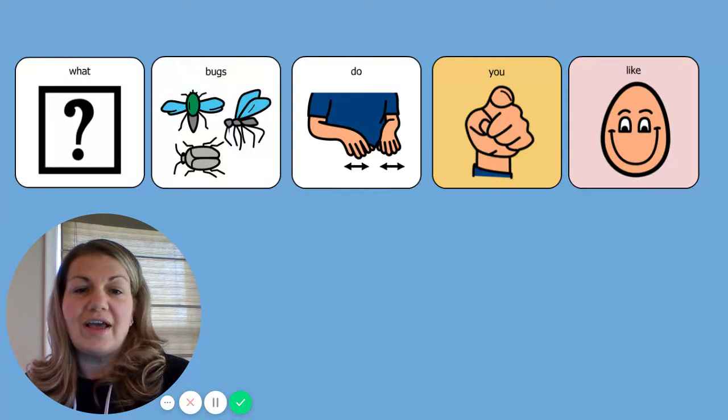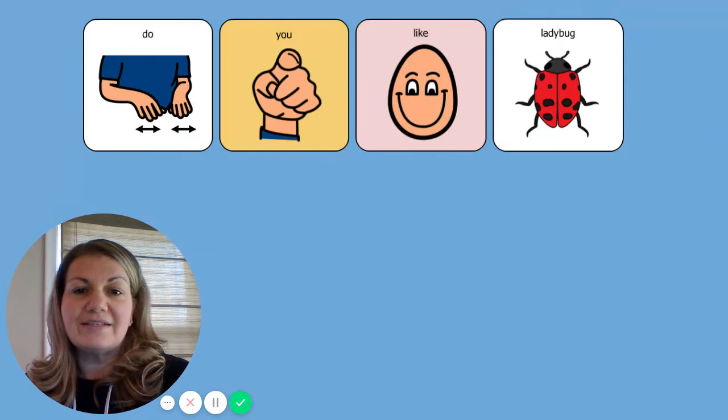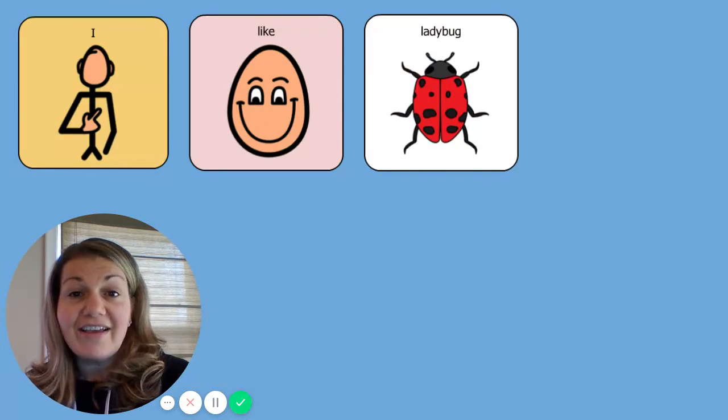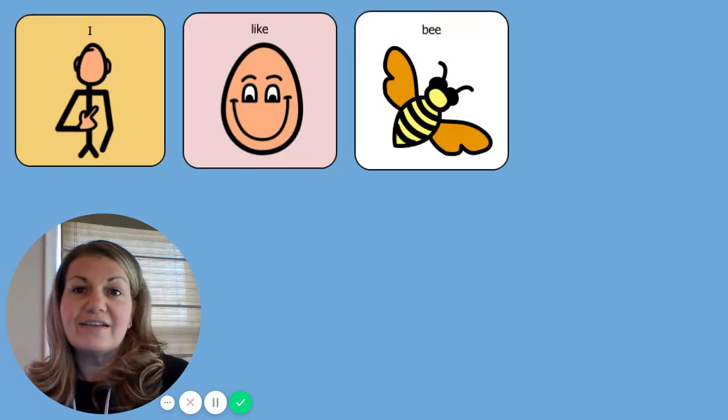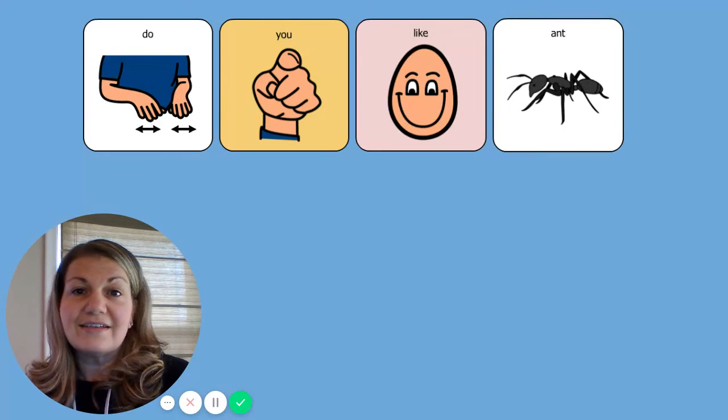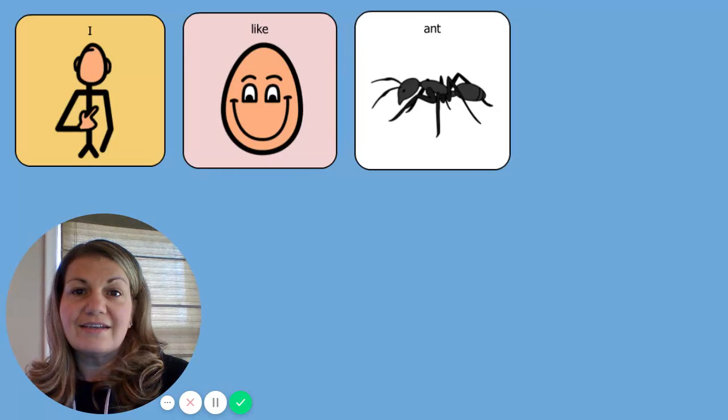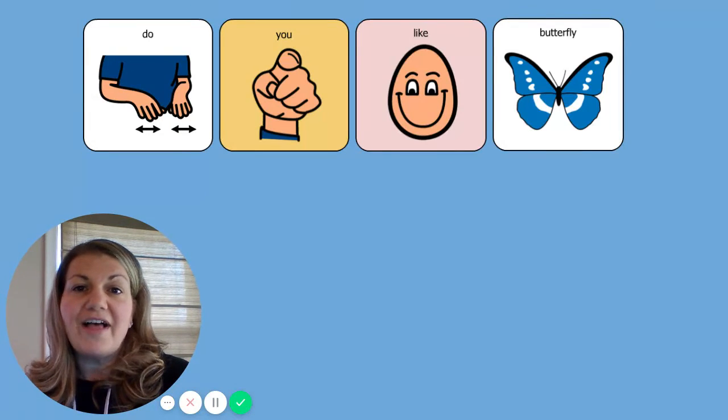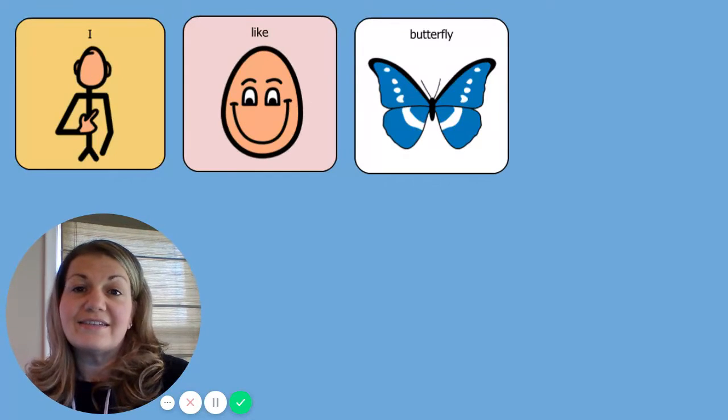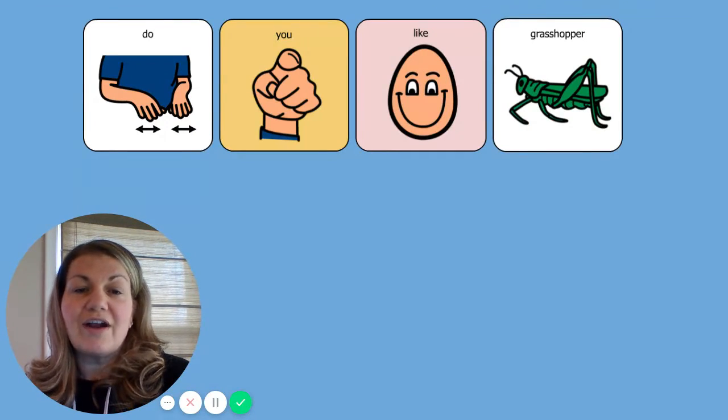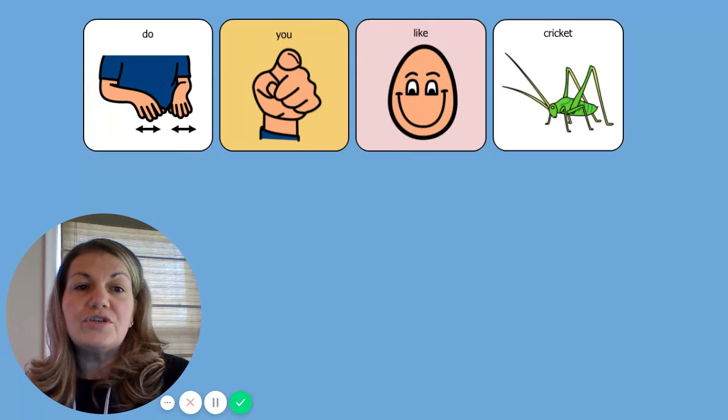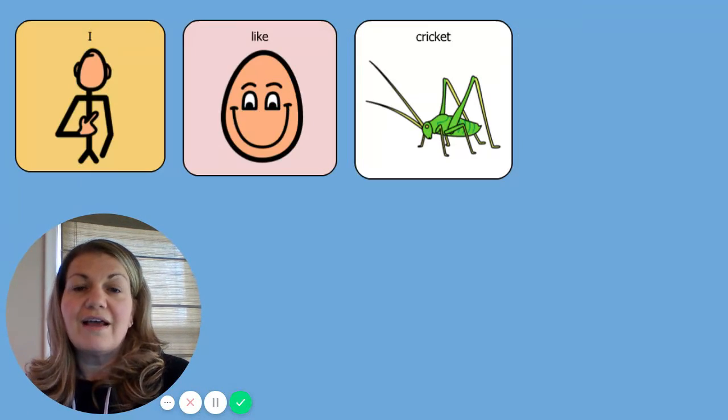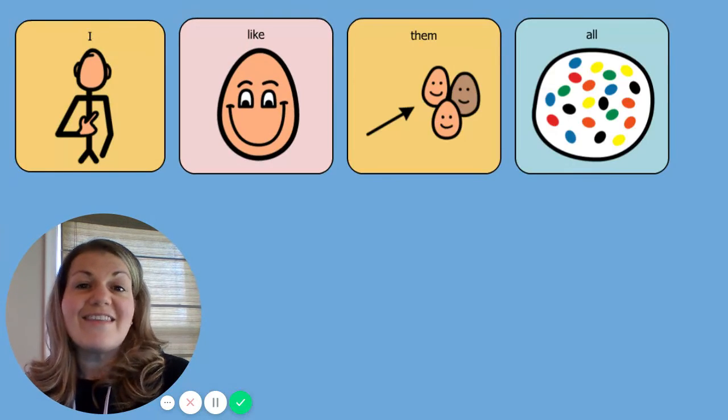What bugs do you like? Do you like ladybugs? I like ladybugs. Do you like bees? I like bees. Do you like ants? I like ants. Do you like butterflies? I like butterflies. Do you like grasshoppers? I like grasshoppers. Do you like crickets? I like crickets. I like them all.